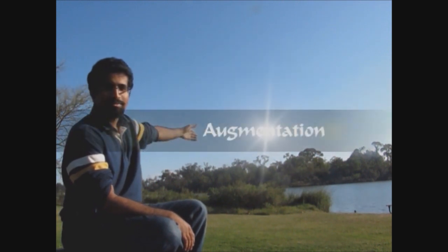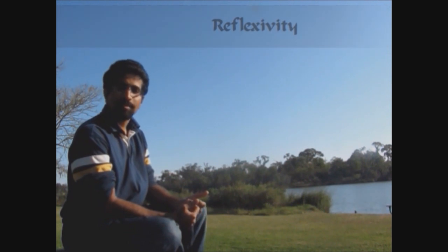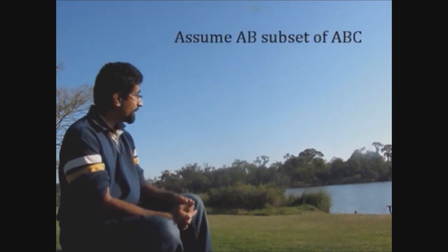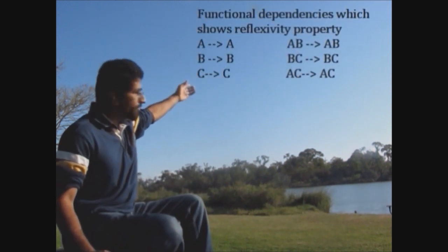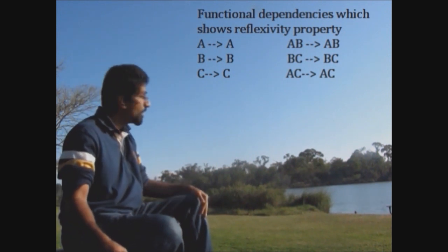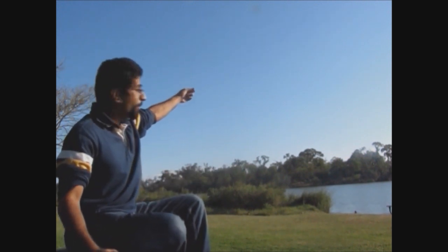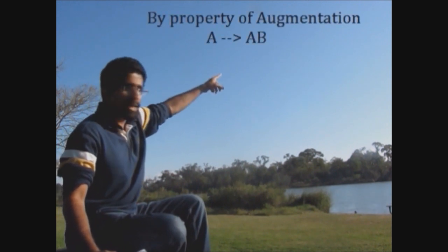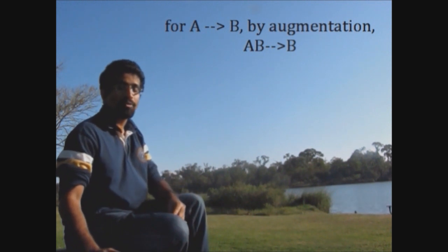So these are my three axioms: reflexivity, transitivity, and augmentation. Let's look at reflexivity first. In reflexivity, an attribute functionally determines itself. So if we have AB as a subset of ABC, then by the reflexivity property, ABC functionally determines AB. Now in augmentation — if we have A functionally determines B, we can add A to both sides. By augmentation, we have A on the left-hand side and AB on the right-hand side. Similarly, we can add B to both sides. That's how augmentation works — we can add the same attribute to both LHS and RHS.